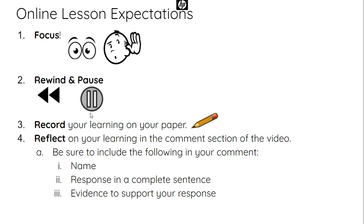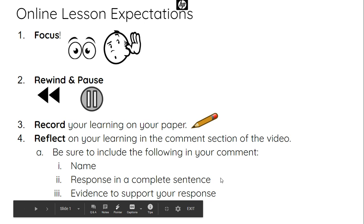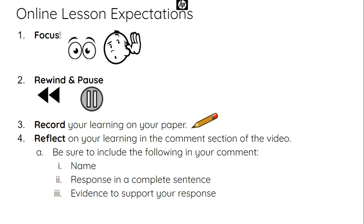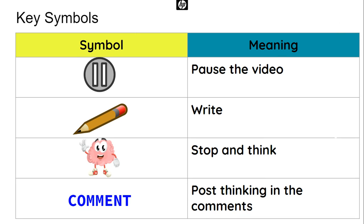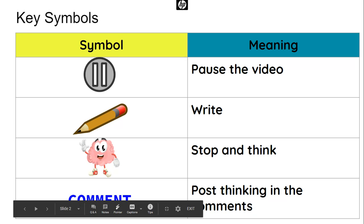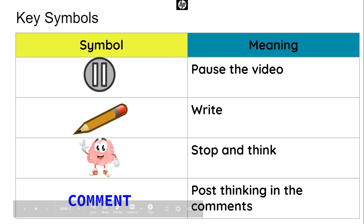Number three, record your learning on your paper. That means you're going to get a piece of paper and a pencil and write down your thinking and answer any questions. Lastly, at the end there will be a question for you to respond to in the comment section. When you leave your comment, make sure you put your name, respond in a complete sentence, and use evidence to support your answer. Some symbols to look out for: the pause symbol means pause the video, the pencil means you're going to write, the brain means stop and think, and the blue letters saying 'comment' means post your thinking in the comments.